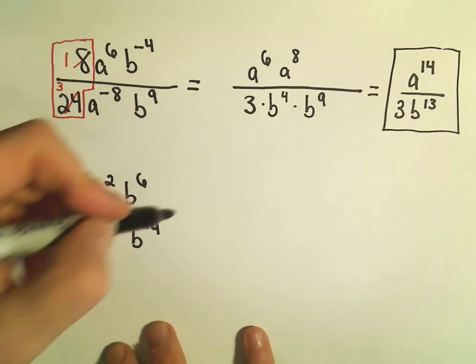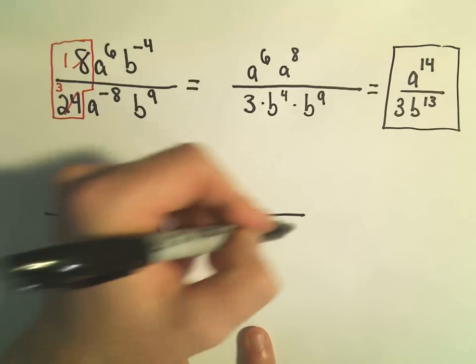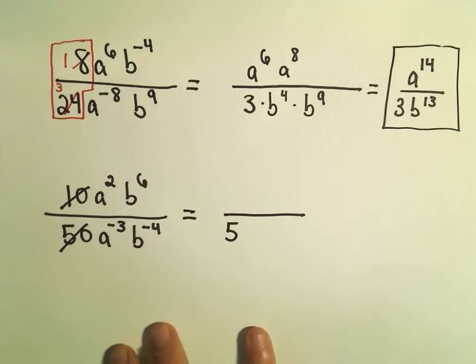Okay, so I'm going to do the exact same thing on the next problem. I think 10 over 50 will go into 10 one time. 10 will go into 50 five times. So there's going to be a 5 in the denominator.